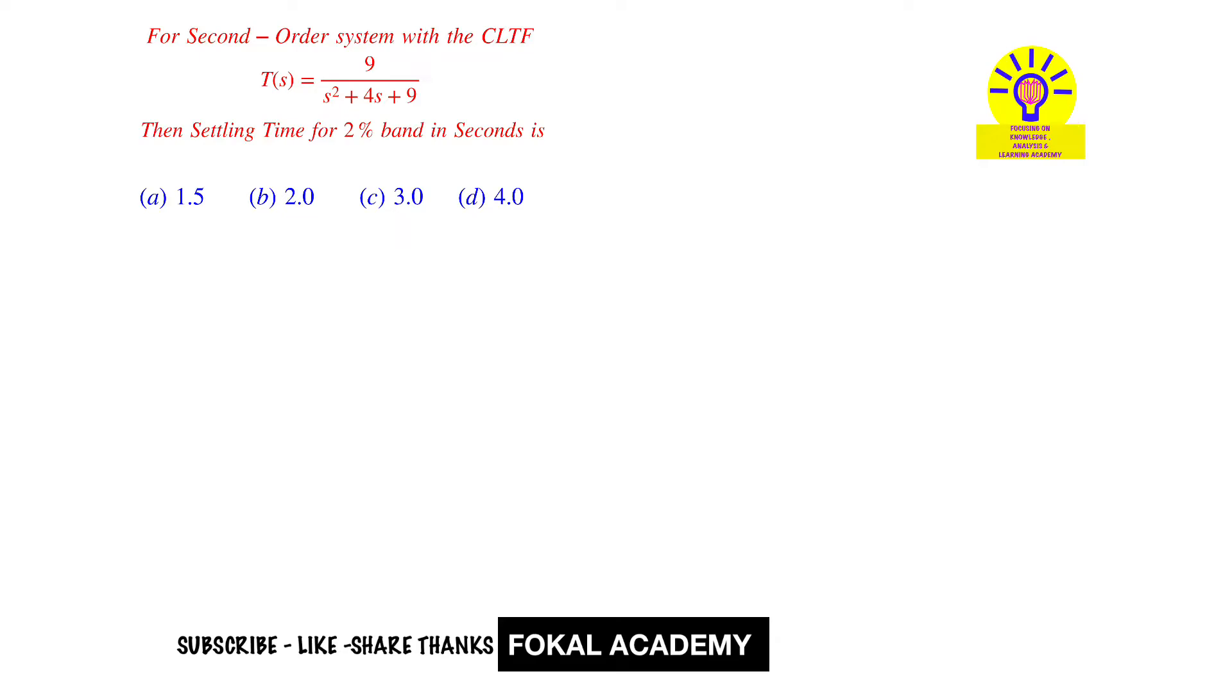Seeing this problem here for a second-order system, the closed-loop transfer function is given as T(s) = 9 / (s² + 4s + 9).